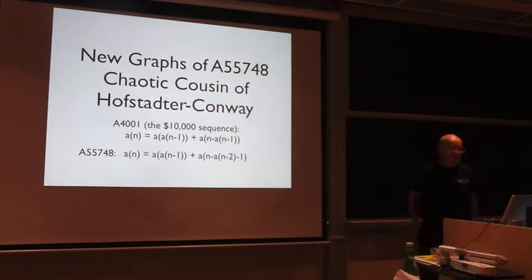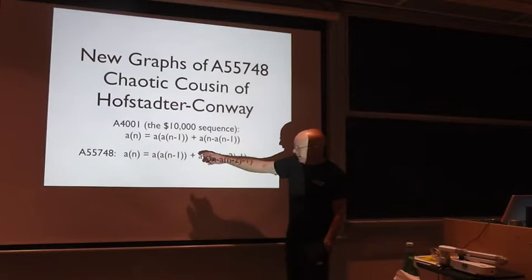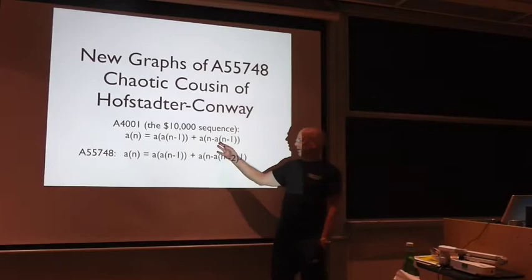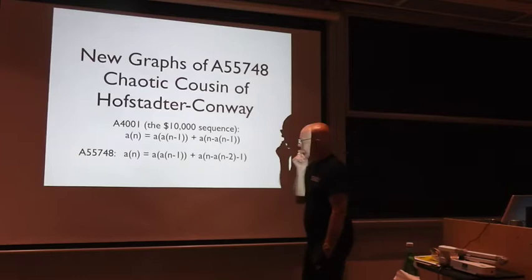And that was sequence A5001, the classic ten thousand dollar sequence, which is defined by a Fibonacci kind of recurrence. The nth term A of n is not A of n minus 1 plus A of n minus 2 like Fibonacci. It's A of A of n minus 1 plus A of n minus 1. So that's the Hofstadter-Conway sequence.